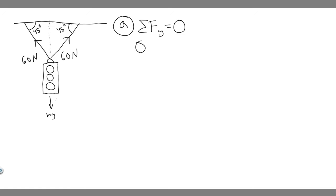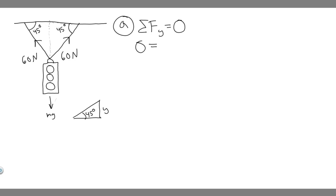So we add up the forces. We need to find the Y component of these tension forces. Think of it like a triangle — the angle of our triangle is 45 degrees, and we're trying to find the opposite side, which I'll call Y. We also know the hypotenuse is 60 newtons, since the tension force is 60 newtons.